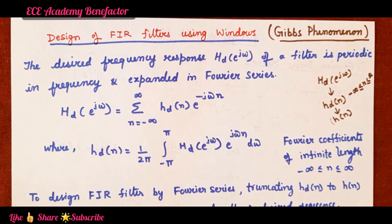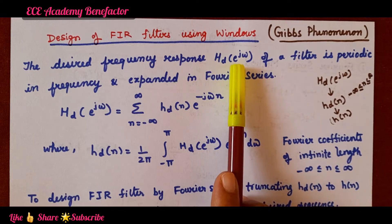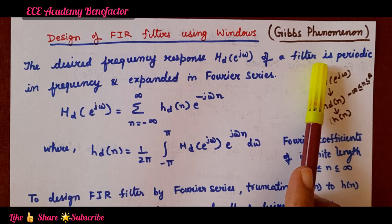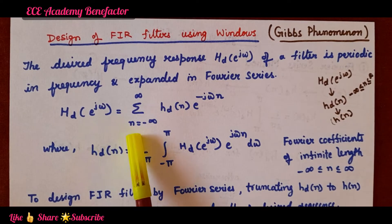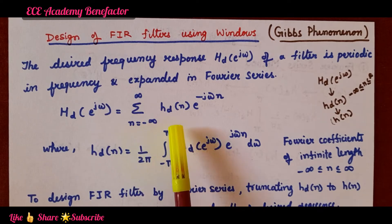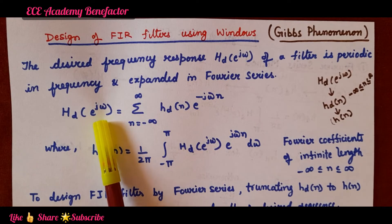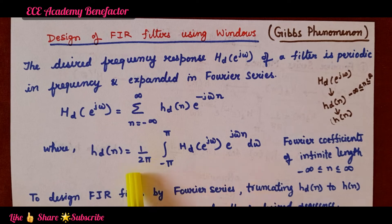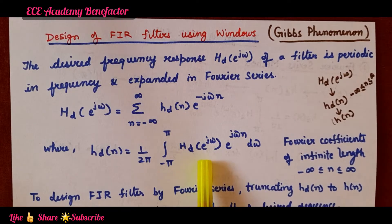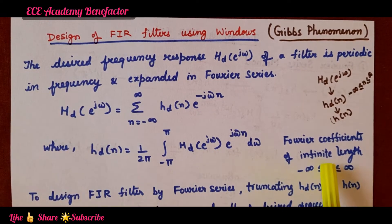So it should be truncated. H_d of e^(jω), that is the desired frequency response of a filter, is periodic, and as it is periodic, it can be expanded in Fourier series in the form: H_d(e^(jω)) = Σ from n = −∞ to ∞ of H_d(n) · e^(−jωn). The desired frequency response is periodic. This H_d(n), known as the Fourier coefficient or desired impulse response, can be computed by: h_d(n) = (1/2π) ∫_{−π}^{π} H_d(e^(jω)) · e^(jωn) dω. These Fourier coefficients are of infinite length.